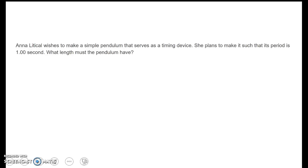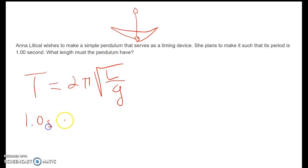Here's another example. Anna Litical wishes to make a simple pendulum that serves as a timing device. She plans to make it such that its period is 1.00 second. What length must the pendulum have? So again, we want to know what length. We're going to keep this thing on Earth, so G is going to be 9.8. Our time is 1 second. 2π square root of L over 9.8. Now, when we want to solve this, we want to think about things to get rid of the radical would be one way to do it.